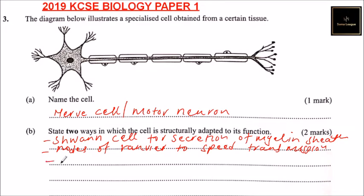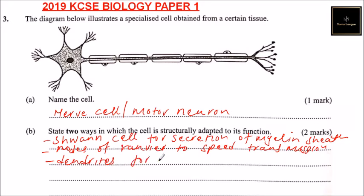Another adaptation is dendrites for receiving, delivering, or transmitting impulses.